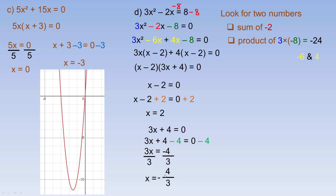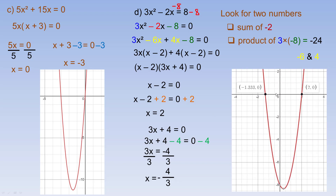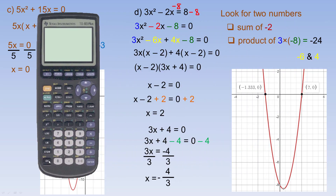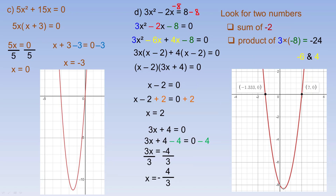So 2 and negative 4 thirds are the solutions, or roots. Here's the graph of this parabola — you can see x equals 2 right here, and negative 4 thirds is approximately negative 1.3 repeating, which we can verify with a calculator: negative 4 divided by 3 equals negative 1.3 repeating. So 2 and negative 4 thirds are confirmed as the solutions, and that is the end of the tutorial.